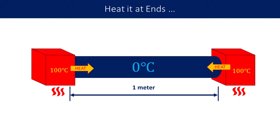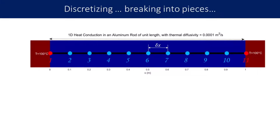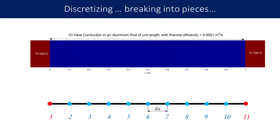We are going to predict how temperature varies inside the aluminum rod by solving the 1D heat equation computationally. Let's idealize the rod as a 1D line of 1 meter. We take 11 points evenly spaced along its length from one end to another. The distance between any point and the immediate next point will be 0.1 meter, and this is what we call delta x.